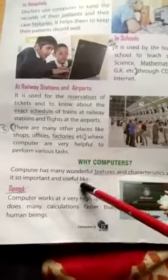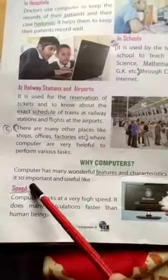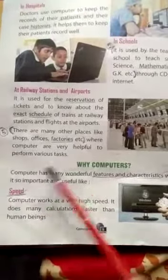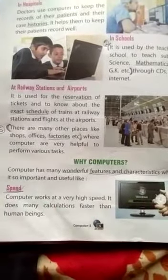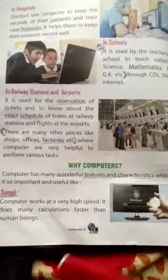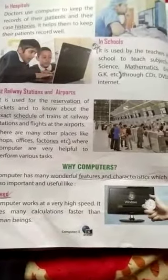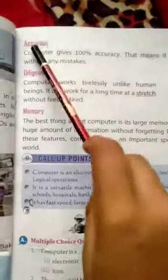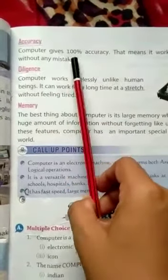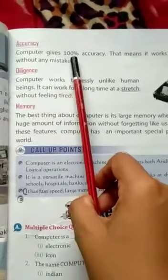Why is the computer used everywhere? इसके बारे में पढ़ाया कि इसकी speed बहुत तेज गति से होती है — ये बहुत high speed से चलता है और आदमी से ज़्यादा तेज़ calculate करता है। Second quality — accuracy — जो बिना किसी गलती के काम करता है।